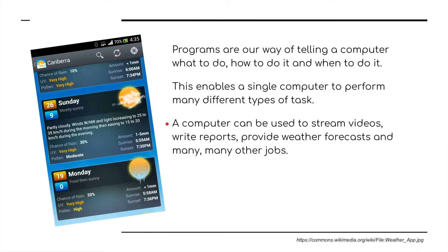But what is a program? Why do we need programs? Programs are our way of telling a computer what to do, how to do it, and when to do it. This enables a single computer to perform many, many different tasks. A computer, for example, can be used to stream videos, write reports, provide weather forecasts, and many other jobs.